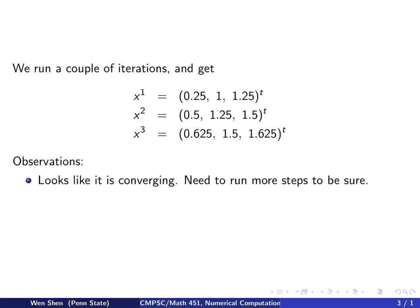So we observe that it does look like it's converging to the value 1, 2, 2. They are increasing, but we really need to run more steps to be sure, because only three steps cannot really tell. And we also observe that if it really converges, it doesn't look like it's converging very fast. So this looks like it's really slow.